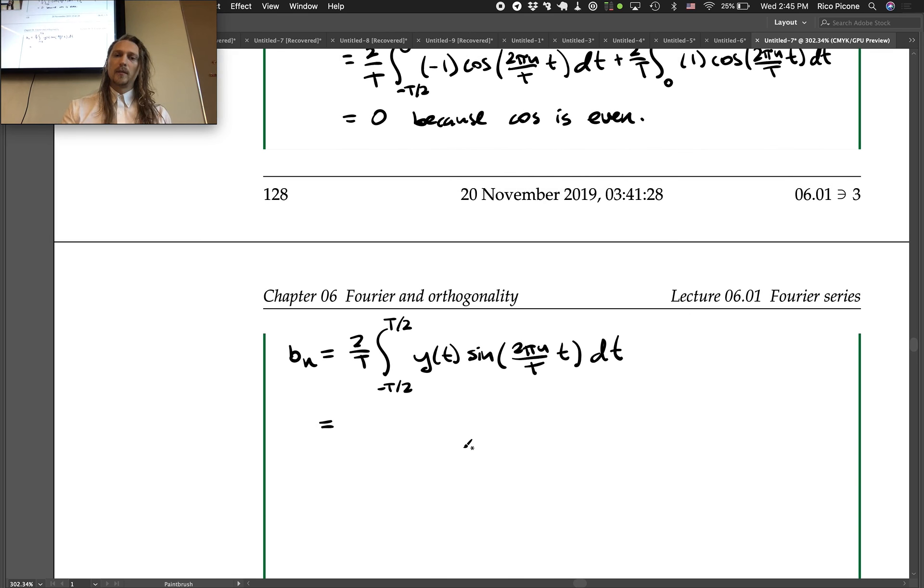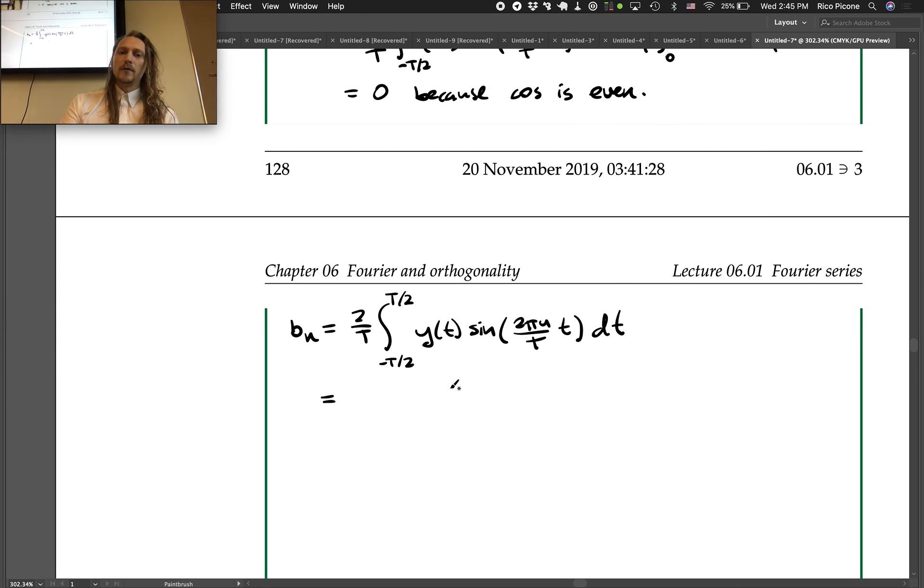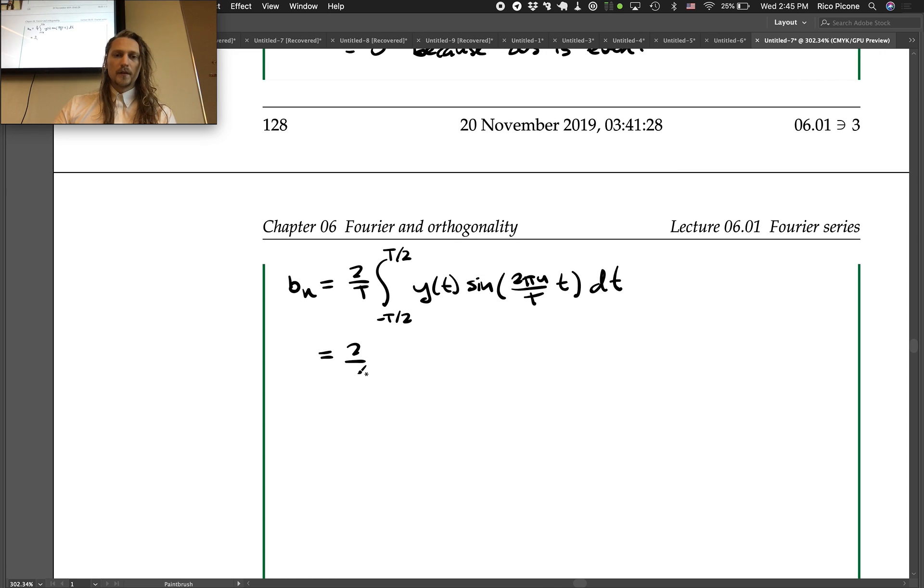Now, we can do a similar thing by splitting up the interval into two halves. So, negative t over 2 to 0, y of t has the value of negative 1. So just like before, we'll have 2 over t. We'll pull the negative sign out front, because we know that we'll be able to do that. So, we're going to integrate from negative t over 2 to 0 of sine 2 pi n over t t dt plus 2 over t integral from 0 to t over 2 of sine of 2 pi n over t t dt.